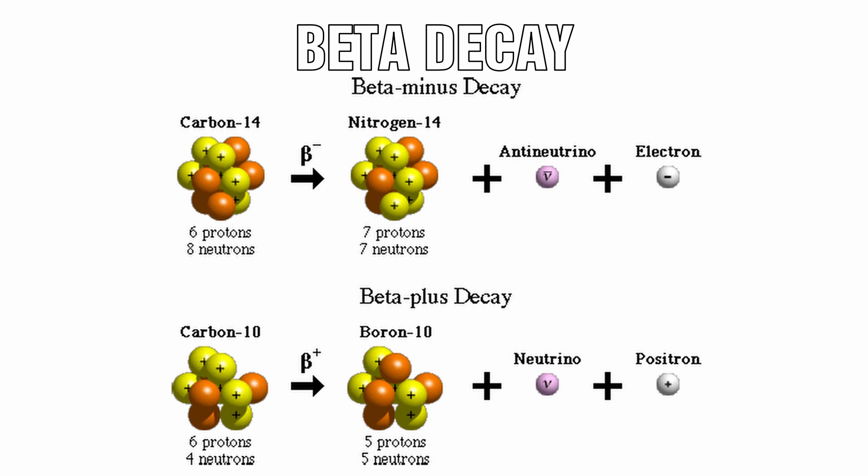Let's now examine beta decay. In the language of the standard model when a neutron in the nucleus is converted into a proton a high speed electron is emitted as well as an antineutrino. This is called beta minus decay. Equally if a proton is converted into a neutron then a high speed positron is emitted as well as a neutrino. Current theory holds that the positron is an electron with a positive charge. This is called beta plus decay.